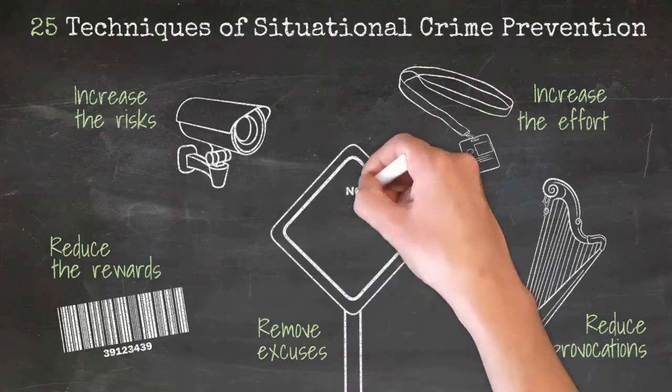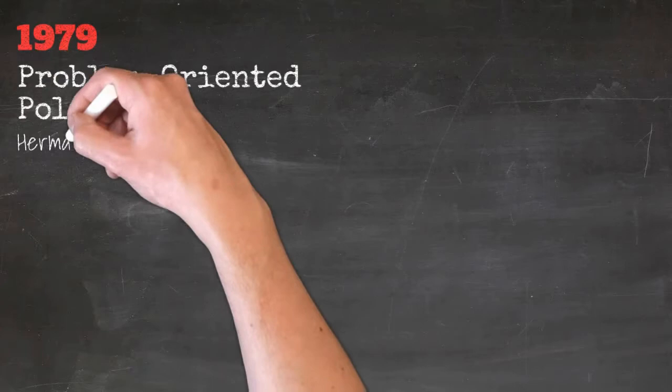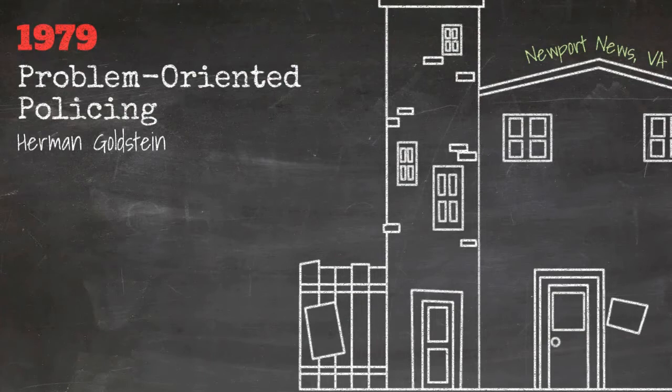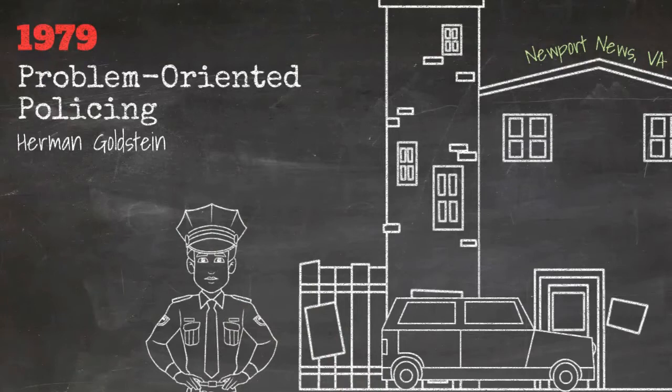In 1979, Herman Goldstein laid the groundwork for problem-oriented policing, and in 1987, the first agency-wide success story was circulated. Problem-oriented policing is a practical approach to policing and management that addresses the underlying conditions causing problems in a community.